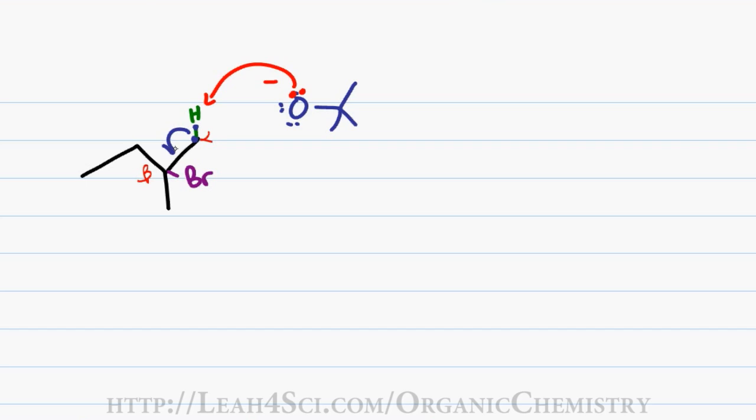Those electrons will collapse towards the alpha carbon, kicking the bromine out in that same step. Recall that E2 is a bimolecular reaction where both molecules react at the same time, so we have three arrows but only one step. This gives me the anti-Zaitsev or less substituted pi bond for our final product.